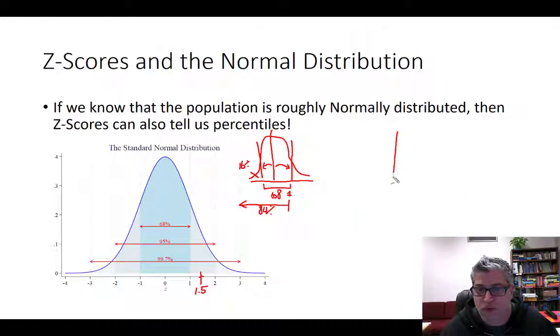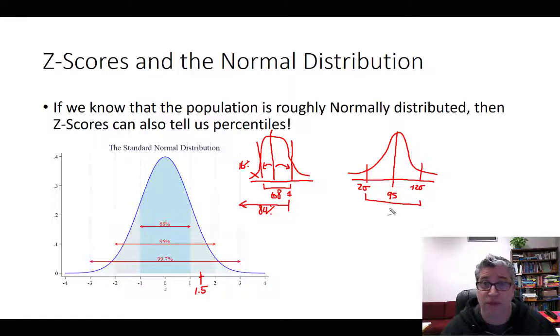Let's do the same thing for plus or minus two standard deviations. Let's see if I can draw this better now. Yeah. So, plus and minus two standard deviations. This counts for 95% of observations.